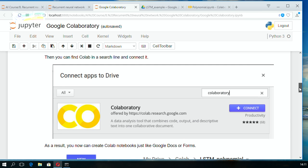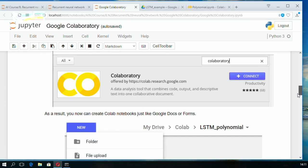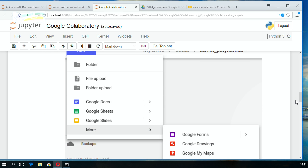Then you write down collaboratory, find it, click connect, and finally you can use collaboratory in your Google Drive.